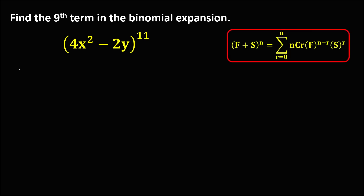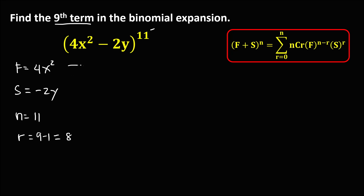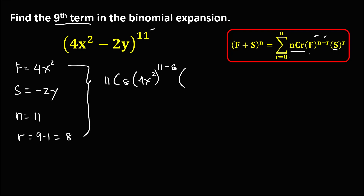For the next problem, the first term is 4x squared and the second term is negative 2y. n, the exponent, is 11. Since we're looking for the ninth term, r equals 9 minus 1, so r equals 8. To find the ninth term, we have 11 choose 8 times the first term 4x squared to the power n minus r, times negative 2y to the power r, which is 8.